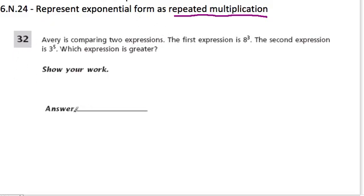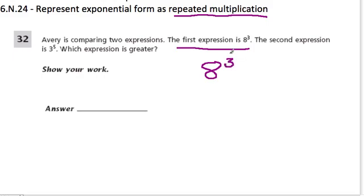So let's look at this problem and try to think about what this really means. Avery is comparing two expressions. Here's the first expression: it's 8 to the 3rd. They call that an expression because there's no equal sign there — it's just a little term. And the second expression is 3 to the 5th.